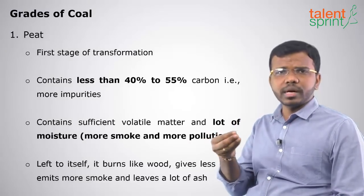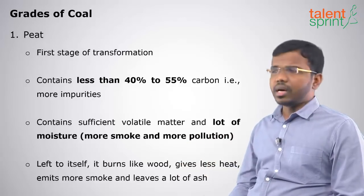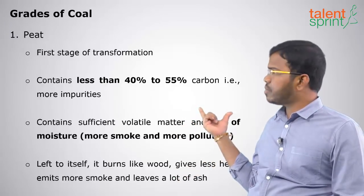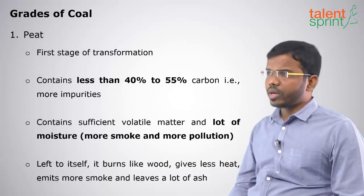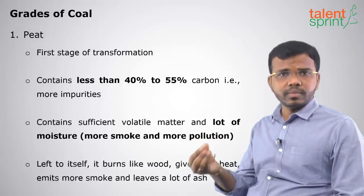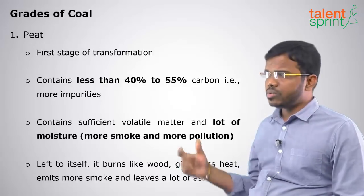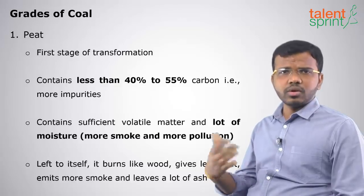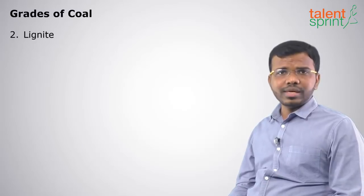The first grade is peat. Peat is organic humus matter present on the surface. It has the highest moisture content and gives a higher amount of smoke. It has very less carbon content — around 40% or less — and is the first stage of transformation of plant matter. It gives very less heat, more smoke, more ash, and has a lot of moisture.